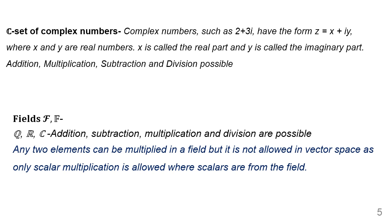We will move on to the next set, called C — the set of complex numbers. It is usually represented as Z = X + iY, where X is the real part and Y is the imaginary part. All four operations — addition, multiplication, subtraction, and division — are possible.